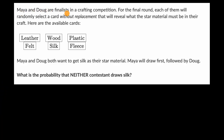We're told that Maya and Doug are finalists in a crafting competition. For the final round, each of them will randomly select a card without replacement that will reveal what the star material must be in their craft. Maya and Doug both want to get silk as their star material. Maya will draw first, followed by Doug. What is the probability that neither contestant draws silk?